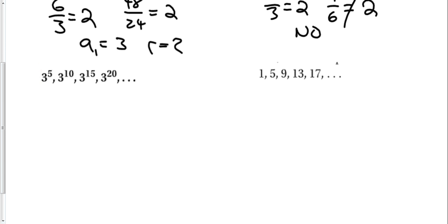For this one, we need to use the rules of the exponents. So this one is 3 to the 5 over 3 to the 0, which equals 3 to the 5. So in this case, a1 equals 3 to the 5. My common ratio is also 3 to the 5. So from one to the next one, multiply by 3 to the 5.